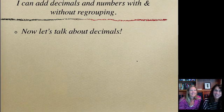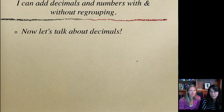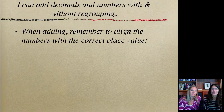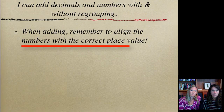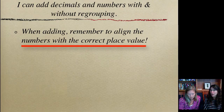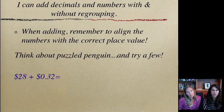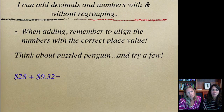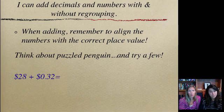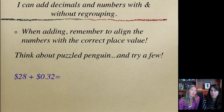So now we need to talk about decimals and how we're going to add up numbers with decimals. When you're adding decimals, you just need to remember, you have to align the numbers with the correct place value. You're going to look here and you're going to add $28 and 32 cents. What's going to be the answer for that? Pause it and try and answer it and then we'll give you the answer and see if you got it right.